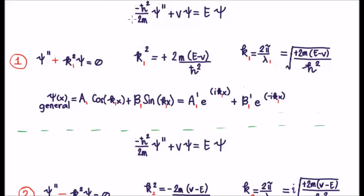If we do that, we can rewrite the time independent Schrödinger equation in this fashion here. Note of course that it's plus k₁².